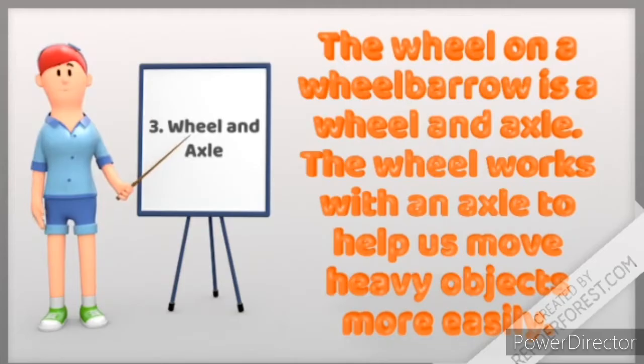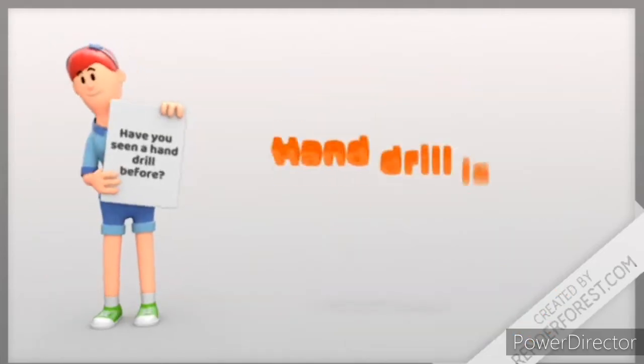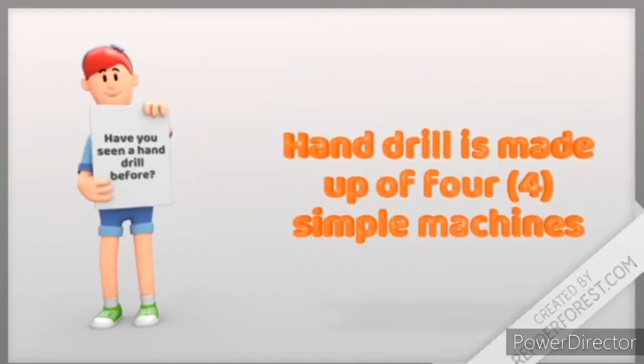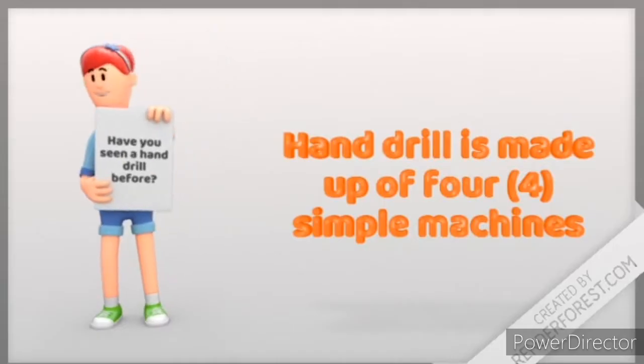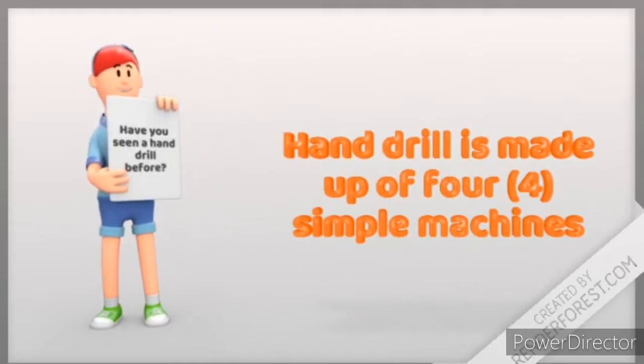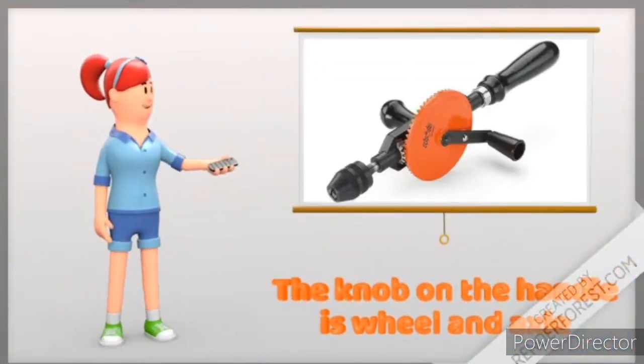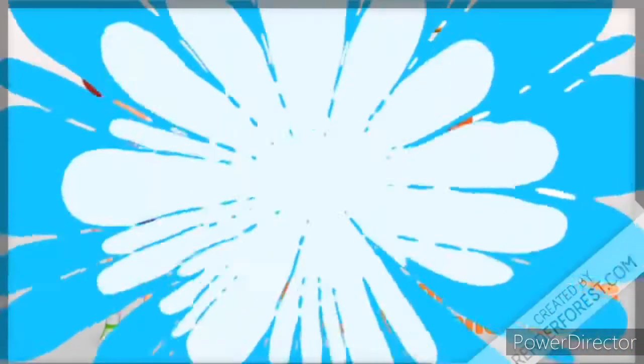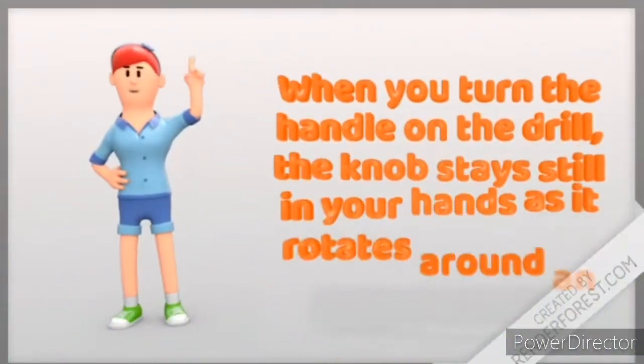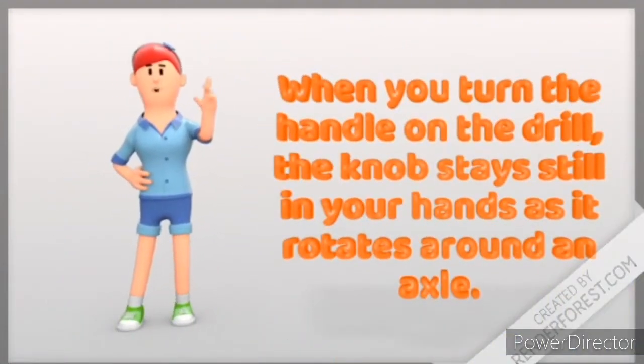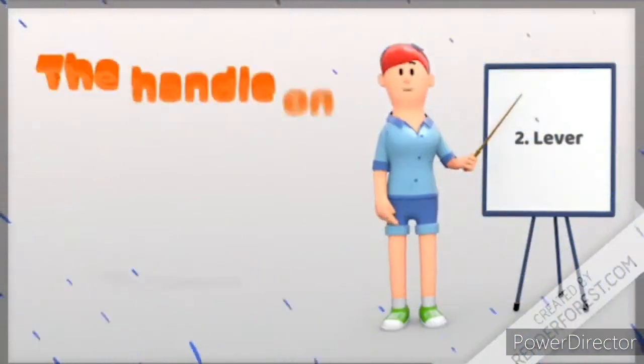What about a hand drill? Have you seen a hand drill before? A hand drill is made up of four simple machines. One, the knob on the drill handle is a wheel and axle. When you turn the handle, the knob stays still in your hand as it rotates around an axle. Two, the handle on the drill is a lever. Turning the lever around a fulcrum creates the energy to work the drill.